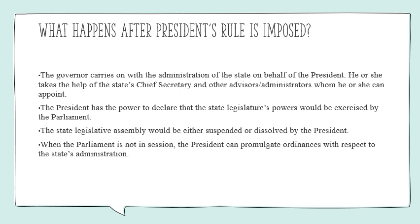After President's Rule is imposed in a state, the Governor acts in the administrative position on behalf of the President. The President has the power to declare that the state's legislative powers will be exercised by Parliament. The state assembly should not be working at the time — it should be either suspended or dissolved. Lastly, when Parliament is not in session, the President can promulgate ordinances with respect to the state's administration.